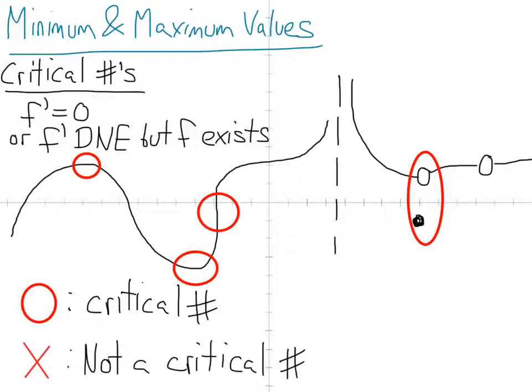The last one on the far right, the removable discontinuity, that's a critical number because the function exists but is not differentiable at that point. Vertical asymptotes are not critical numbers. Holes are not critical numbers. So there's no chance for a minimum and maximum value at those points.